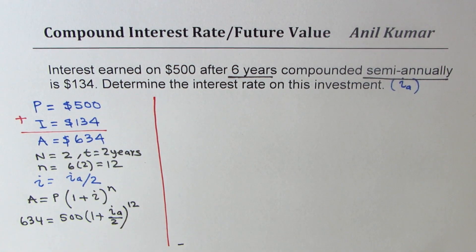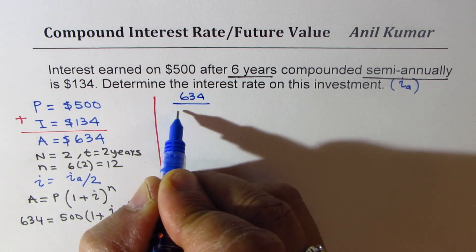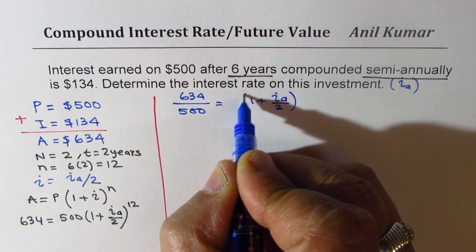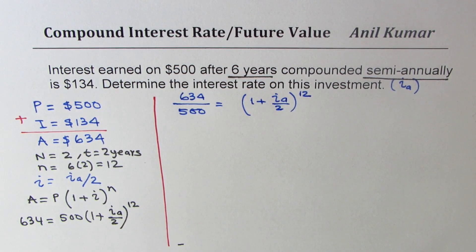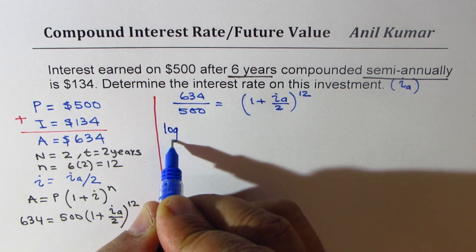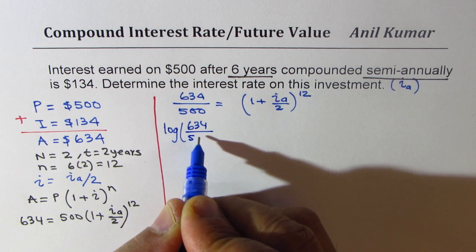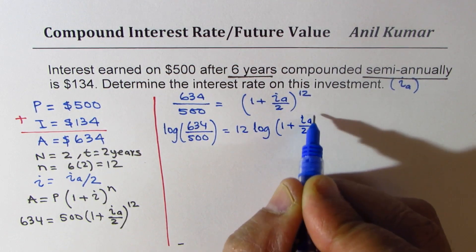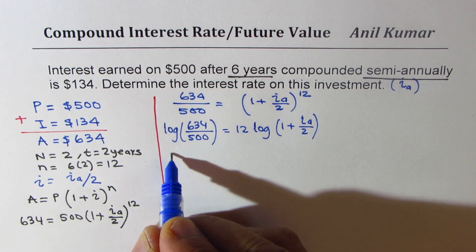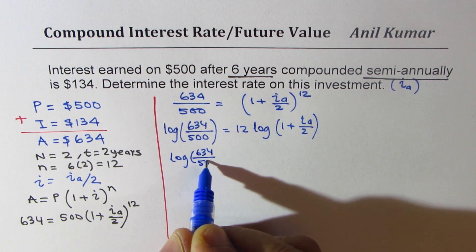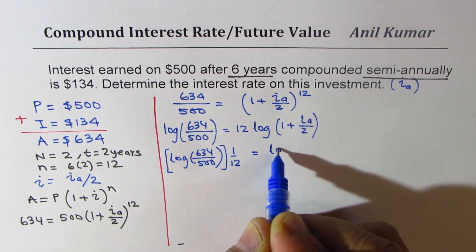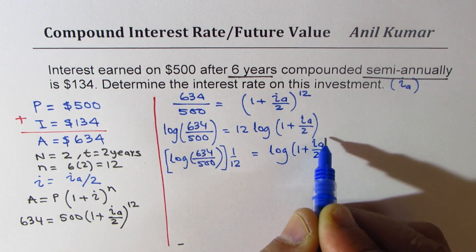Second step is to take log both sides. When you take log both sides you get: log of (634 over 500) equals 12 times log of (1 plus interest per annum divided by 2). Now you divide by 12, so you get: log of (634 over 500) divided by 12 equals log of (1 plus interest per annum divided by 2). When we say log, it is to the base 10.